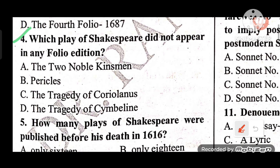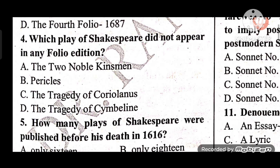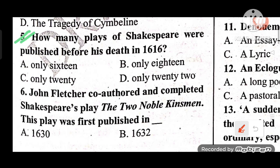Question 4: Which play of Shakespeare did not appear in any folio edition? Options: A) The Two Noble Kinsmen, B) Pericles, C) The Tragedy of Coriolanus, D) The Tragedy of Cymbeline. The answer is A — The Two Noble Kinsmen did not appear in any folio edition.